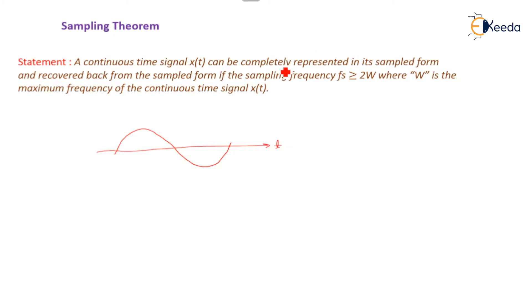It is completely represented in its sample form. That means, how the samples are taken? Basically, we are taking the sample in such a way that we are applying some impulse signals at a regular interval of time depending on the sampling frequency. The sample of that particular information signal, it is taken.